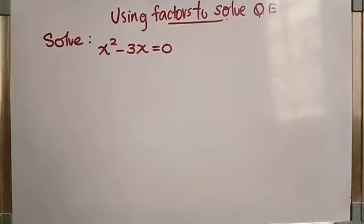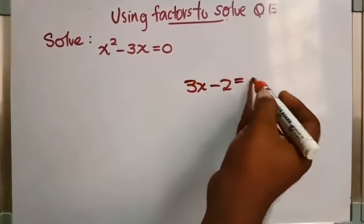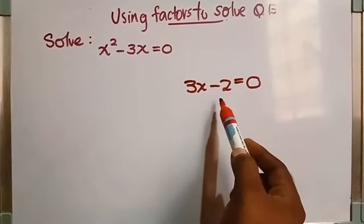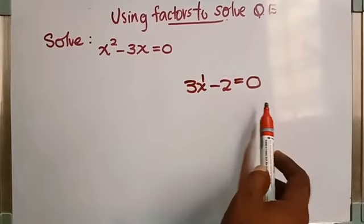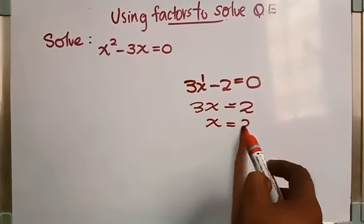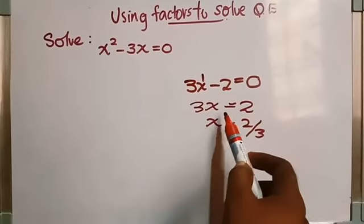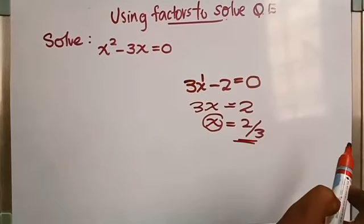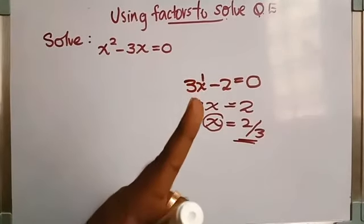We already learned how to solve a linear equation. Why is it known as a linear equation? Yes, it has the power or degree 1. To solve this linear equation, it was very simple — we made x the subject of the formula, transposing every term to the other side. We get the value of x, and we got only one value for x, because the degree is 1. First-degree equations have only one solution.